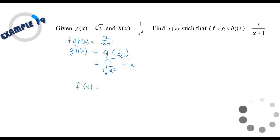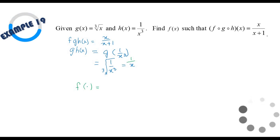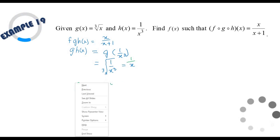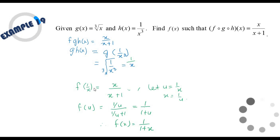So f(1/x) = x/(x + 1). Let u = 1/x, so x = 1/u. Substituting, f(u) = (1/u)/((1/u) + 1) = (1/u)/((1 + u)/u) = 1/(1 + u). Changing back u to x, we get f(x) = 1/(1 + x). That's all for this second hour lecture.